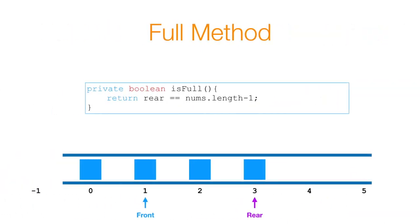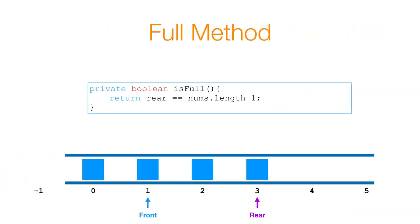Now let's look at the isFull method. It's also very simple. Because our rear variable holds the index of the last element we added, if rear equals nums.length minus one, that means the queue is full and we return true. Otherwise we return false.